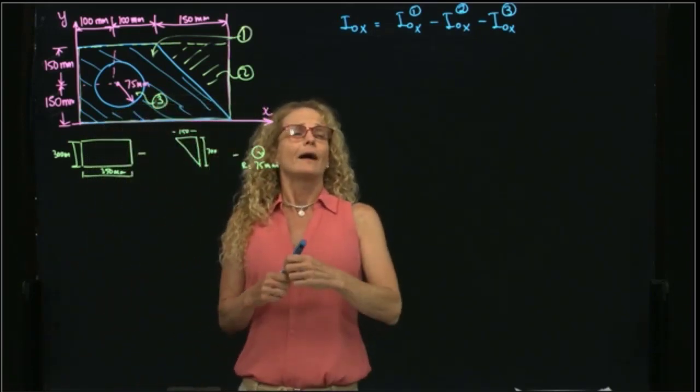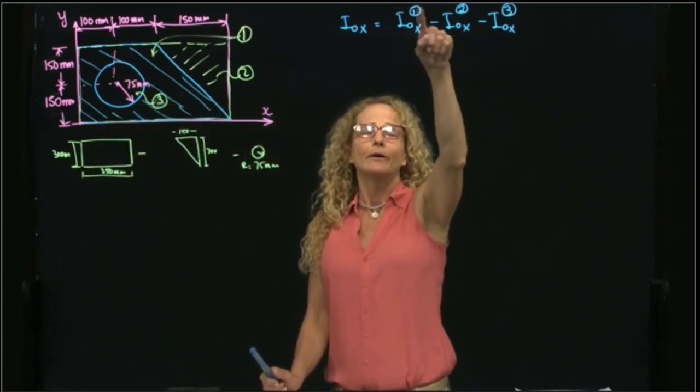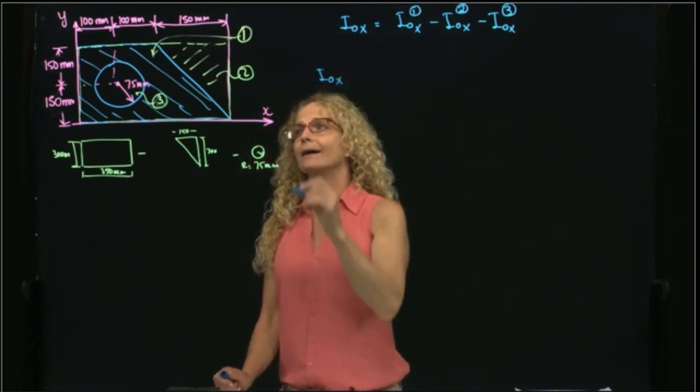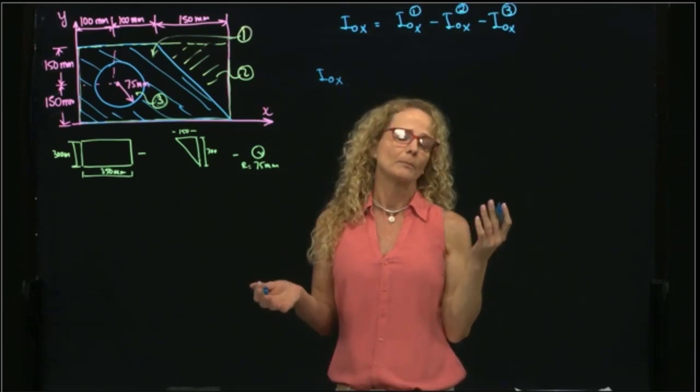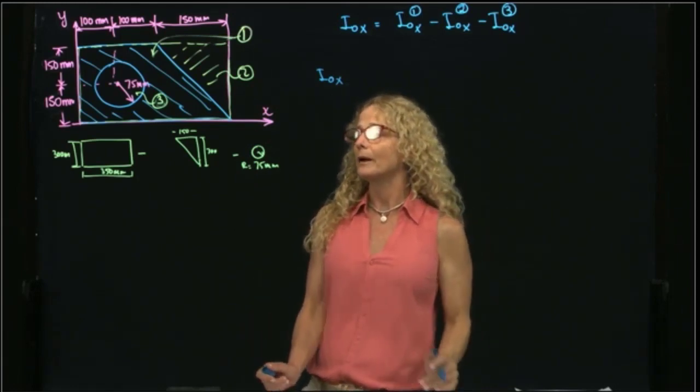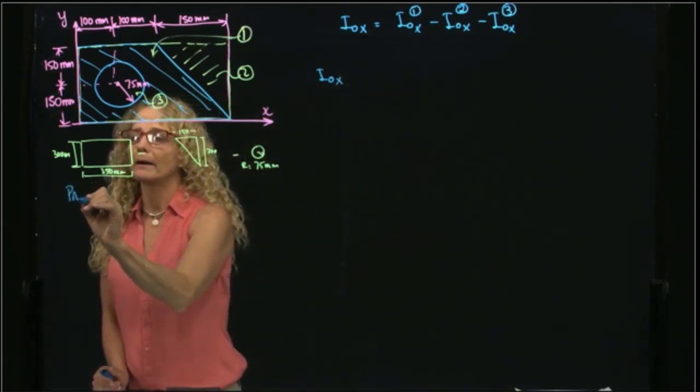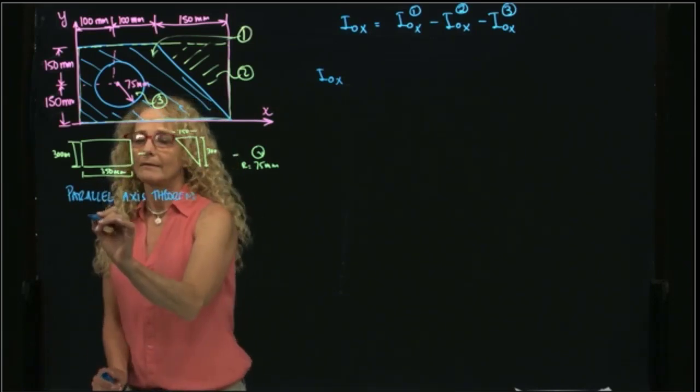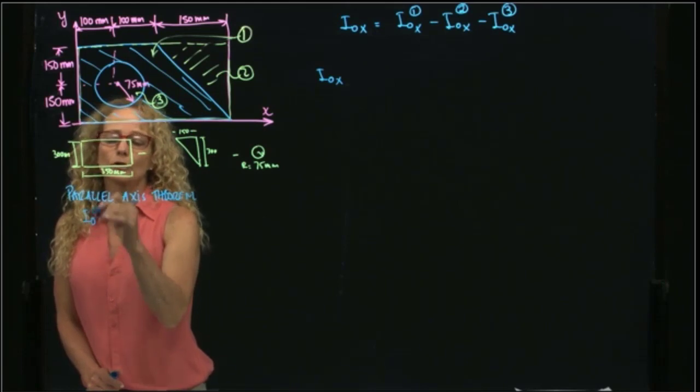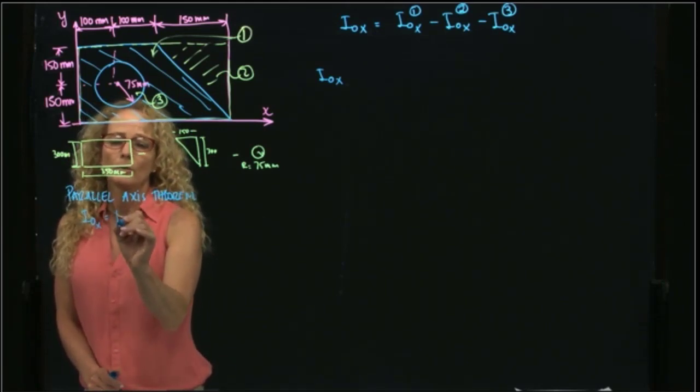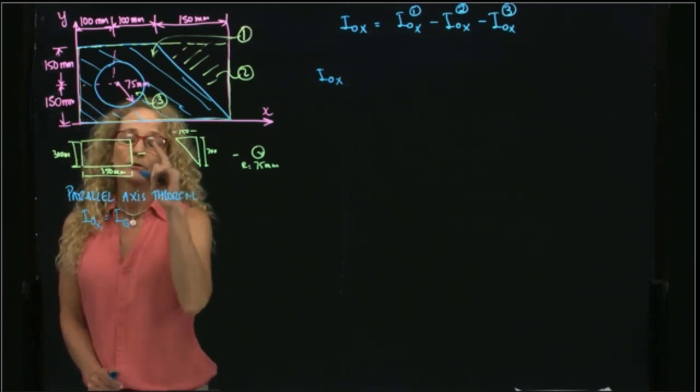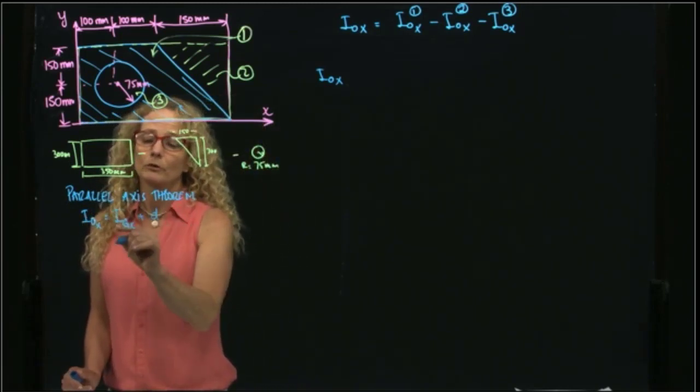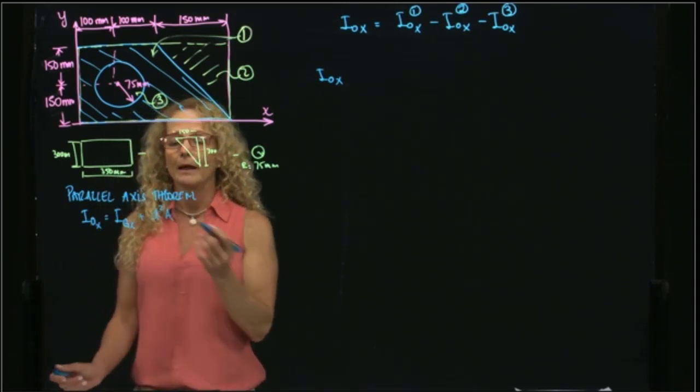So let's start by calculating the area moment of inertia of the first figure. And to do that, I will have to use the parallel axis theorem. And as you recall, the parallel axis theorem is that the inertia with respect to any point will be the inertia with respect to the center of gravity of the figure plus the distance between those two axes squared times the area.